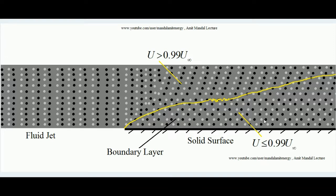Consider a fluid jet moving over a solid surface. When fluid flows over a solid surface, the surface exerts a shear force on the flow due to friction. The effect of that friction is significant only up to a certain distance in the normal direction from the surface — that distance is called the boundary layer thickness.